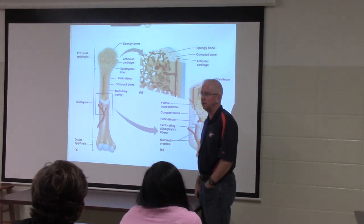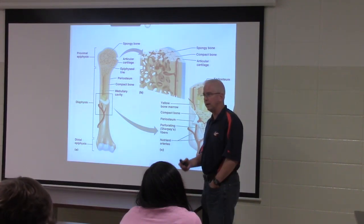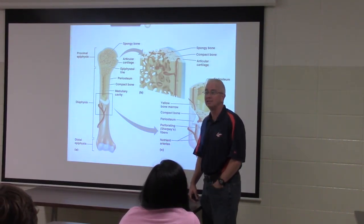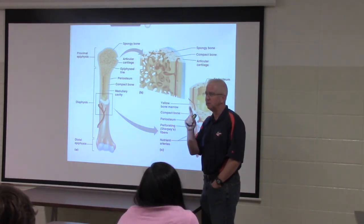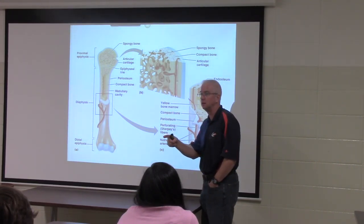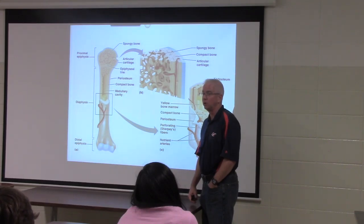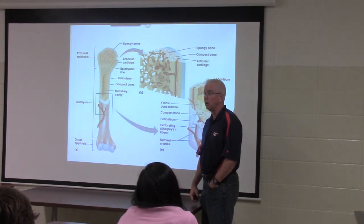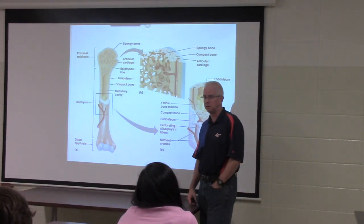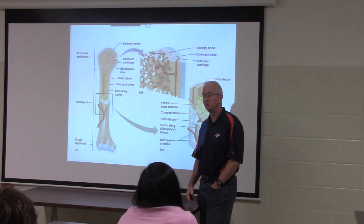Blood cells are being made all over the body. If leukemia or a blood cell developmental problem is suspected, a sample of reticular tissue is needed to examine the stages and proportions of blood cells present. The sample is typically taken from the spine or hip, as accessing the skull or sternum is not safe.